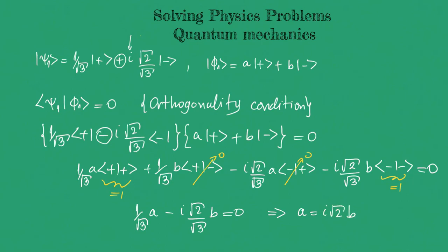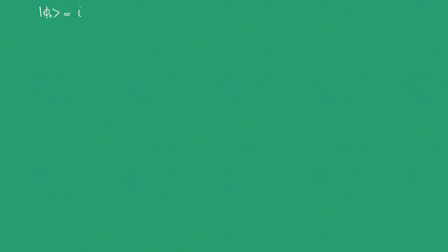This equality says that any pair of a and b obeying this relationship gives us an orthogonal |φ₁⟩. For simplicity, let's assume b = 1, which implies a = i√2. Therefore our orthogonal quantum state is |φ₁⟩ = i√2|+⟩ + |−⟩.